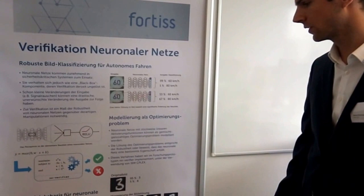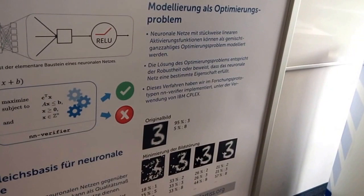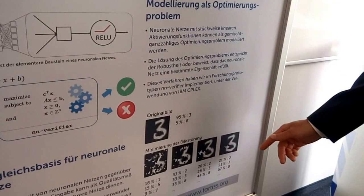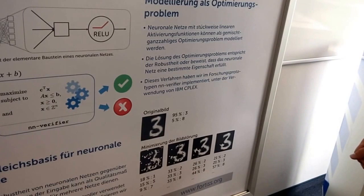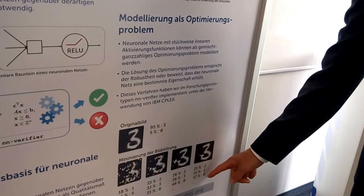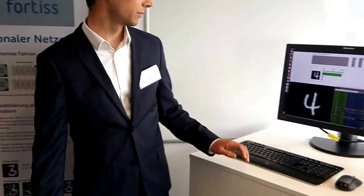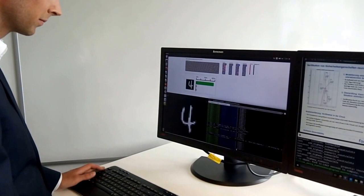Regarding the robustness against modifications of images, we can also compute maximum resilience against these modifications and then compare different neural networks regarding their resilience. And in the bottom picture, we illustrate that our tool can also be used to generate so-called adversarial examples. An adversarial example is an image which looks similar to, for example, this 3 here, but the network classifies it as something different than a 3, for example an 8.